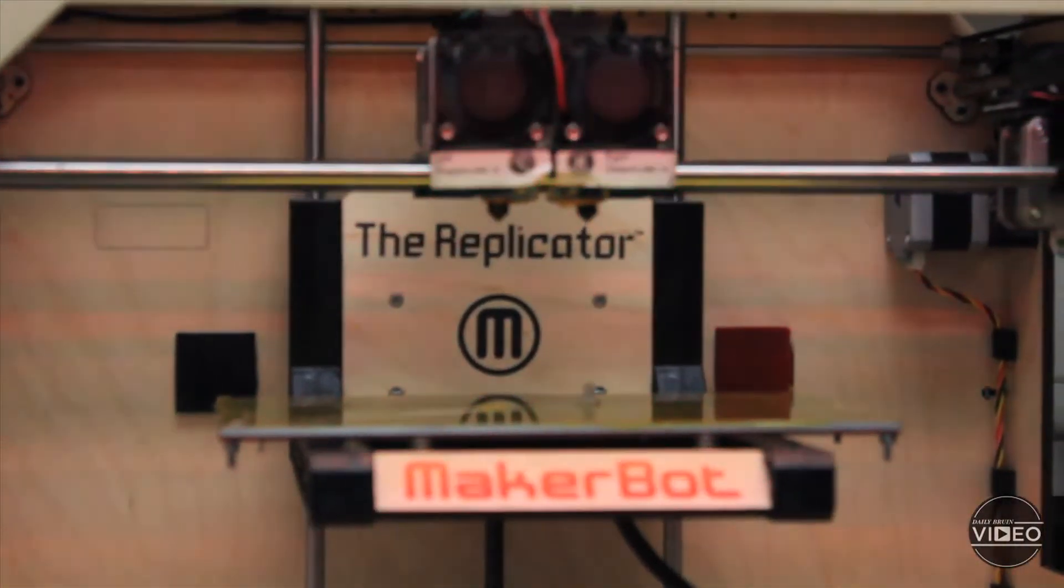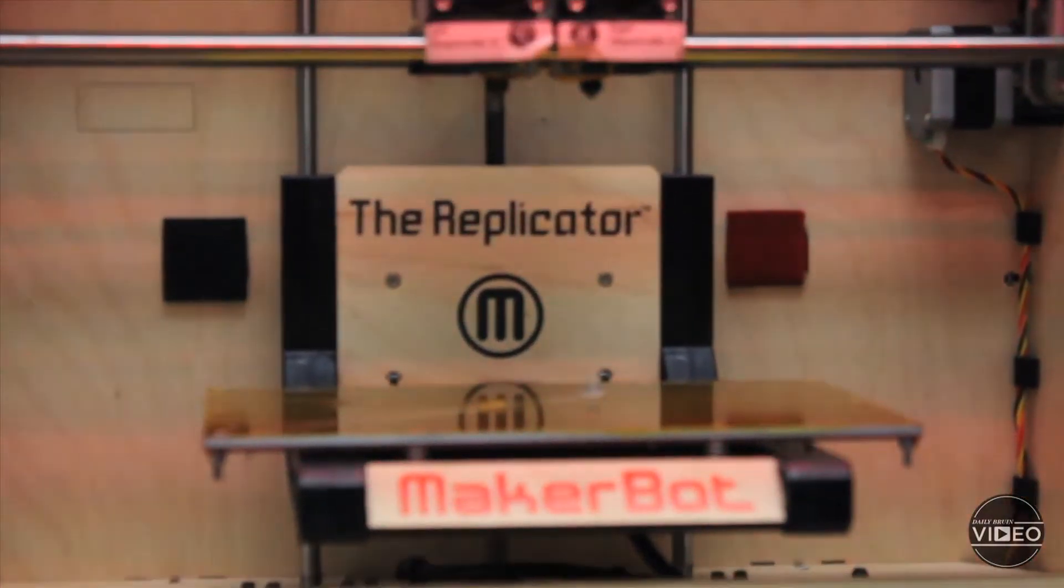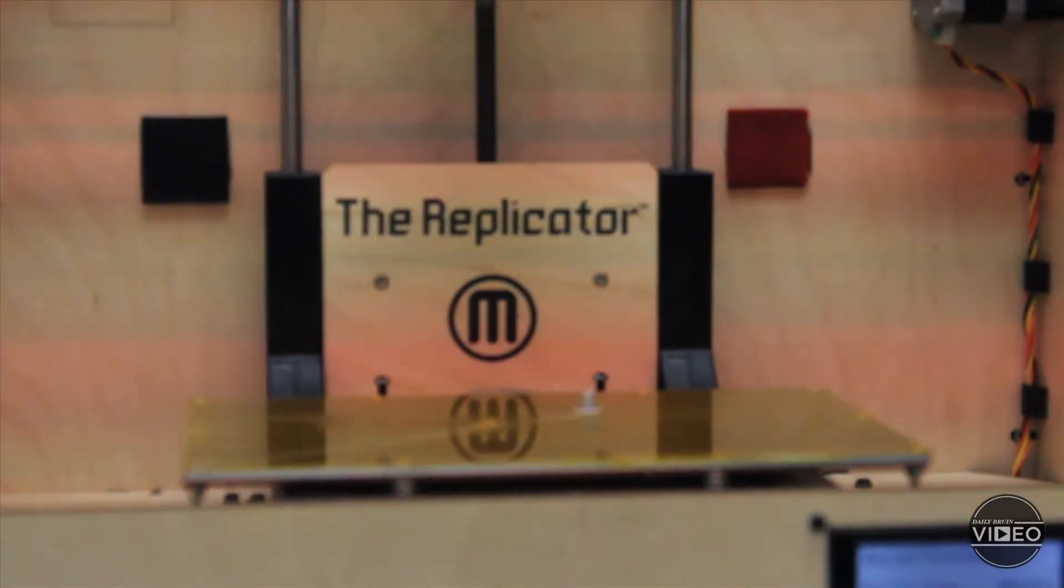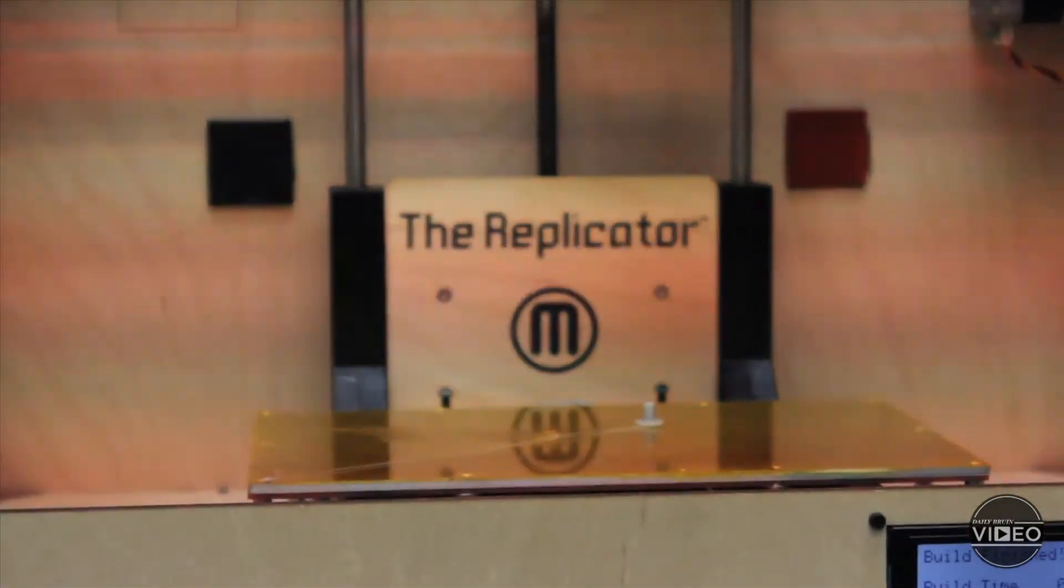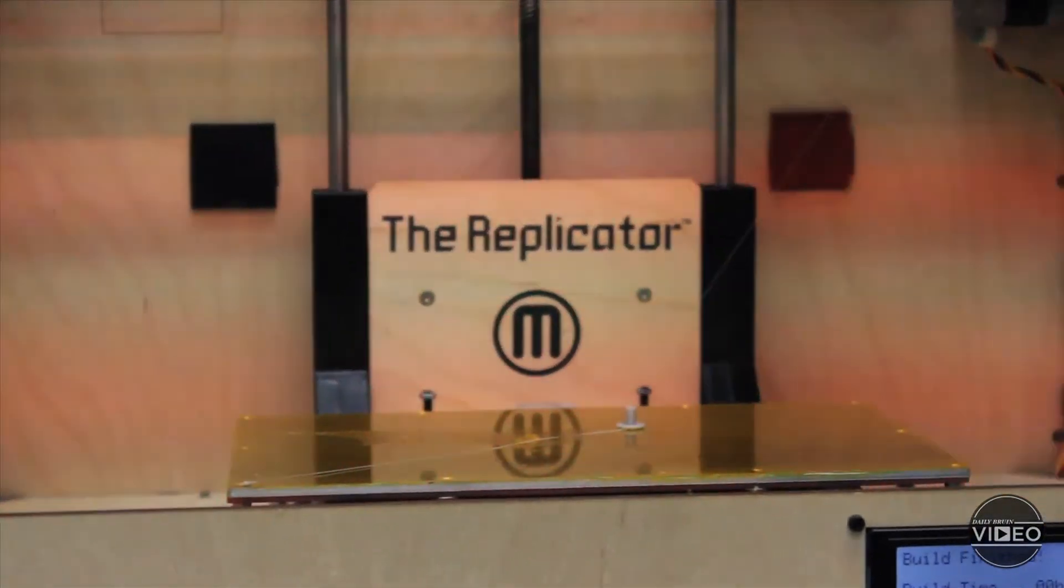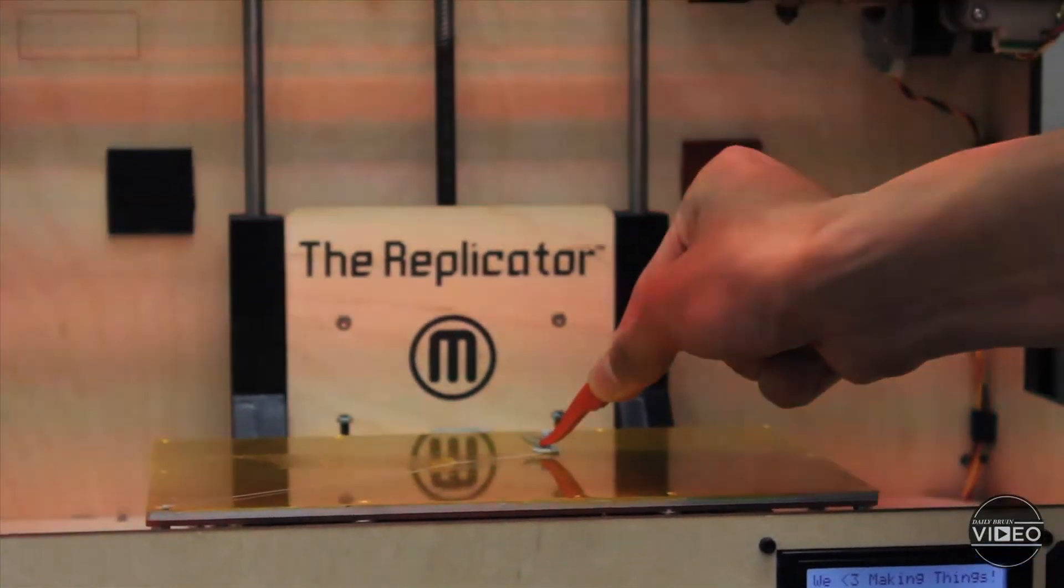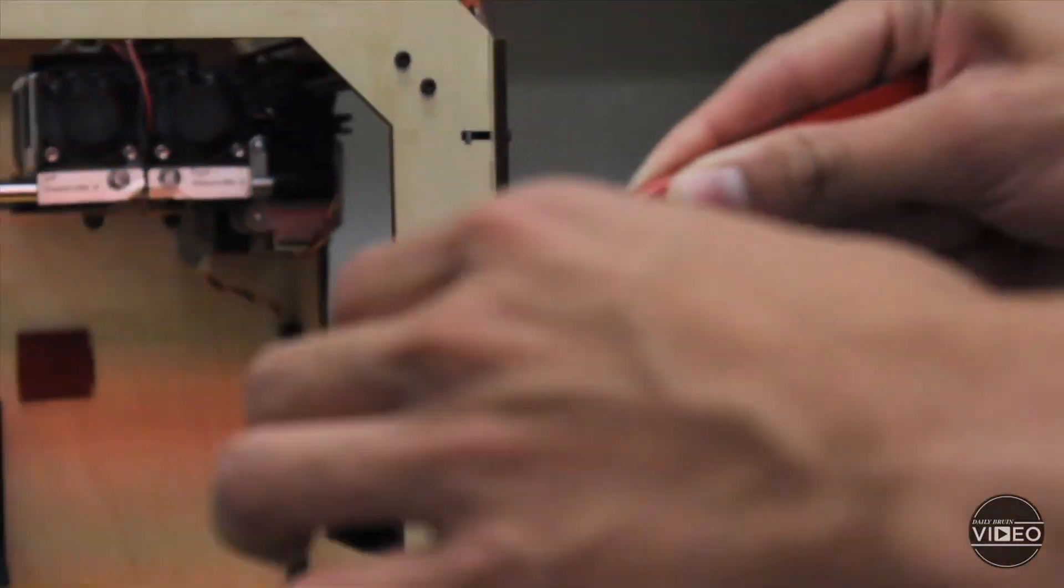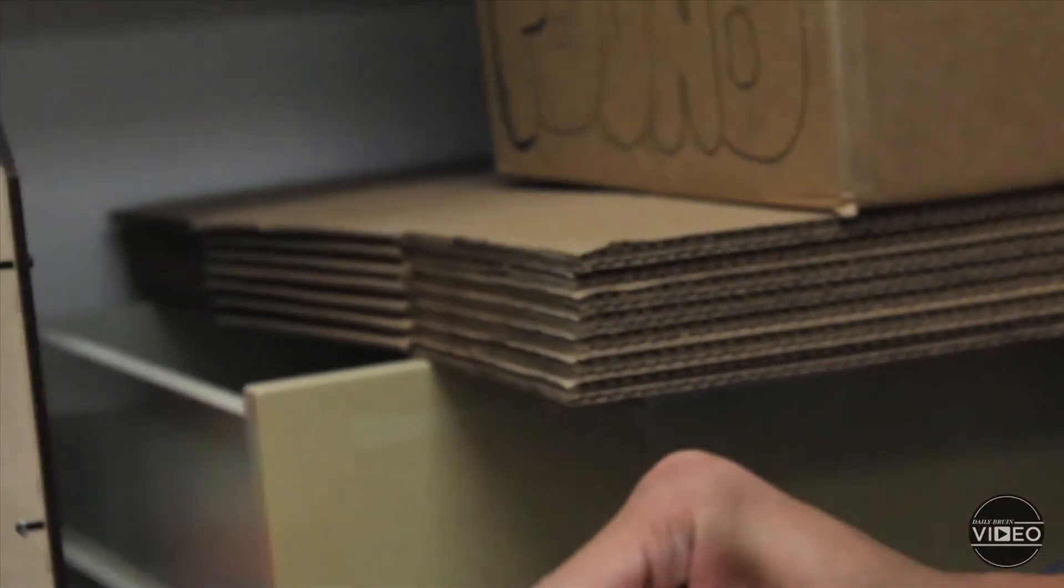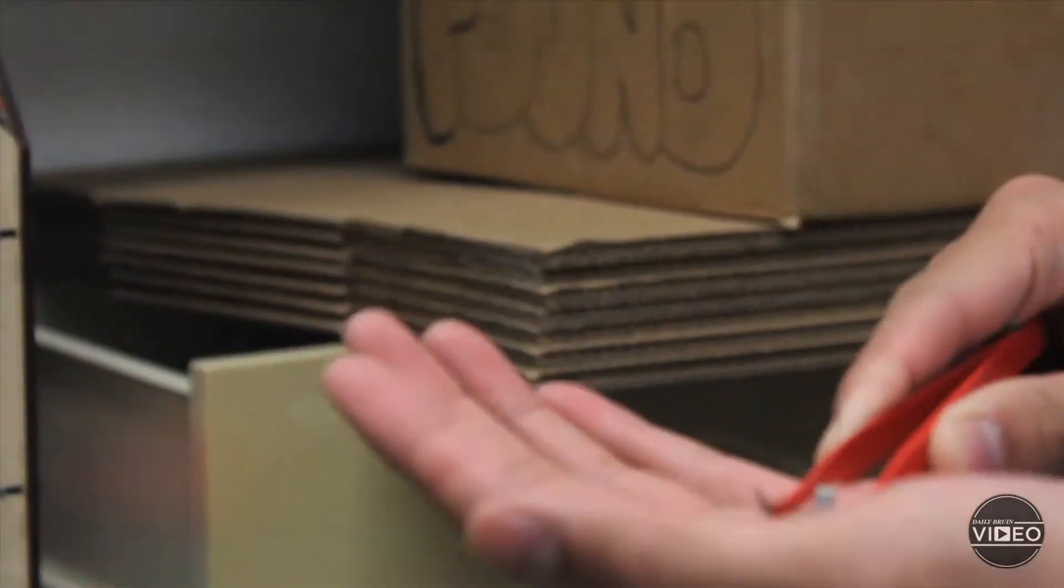Now that the print's done, the build plate will automatically lower to its default position, and the extruders on top will go to its resting position. At this point, all you have to do is grab your print and take it off of the build plate, and then you're left with your final print, which is a small button.